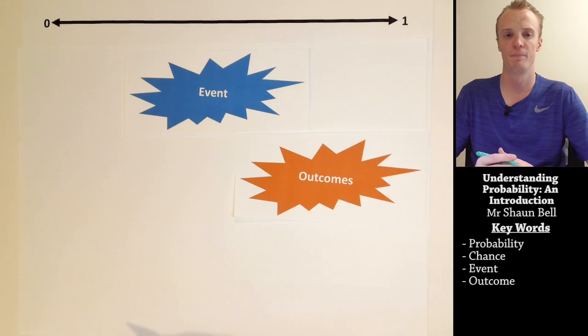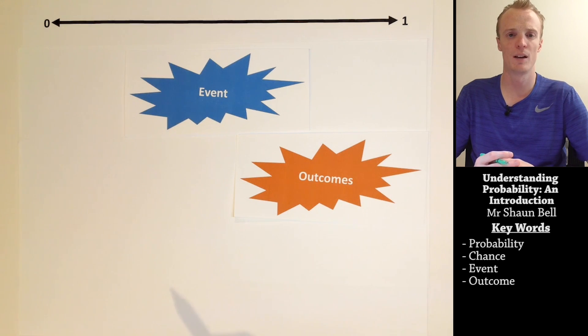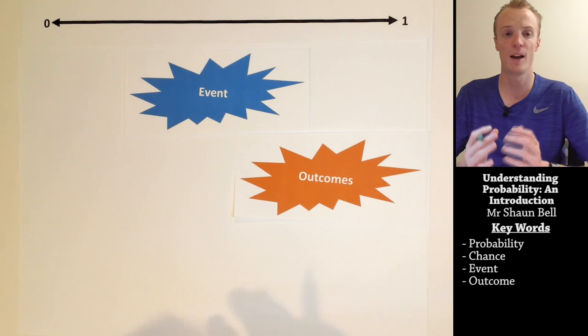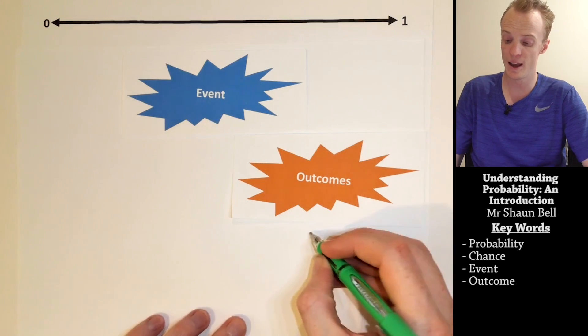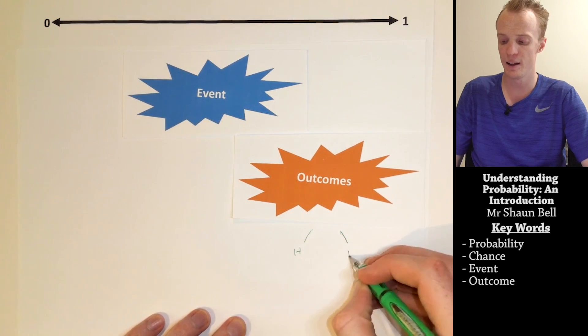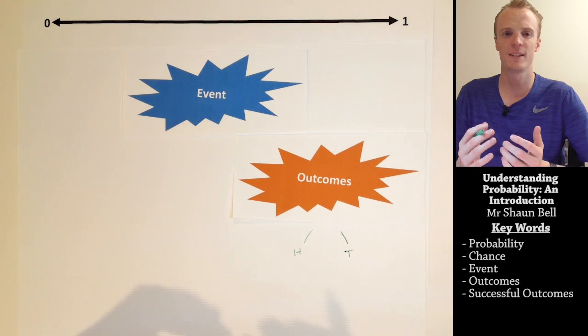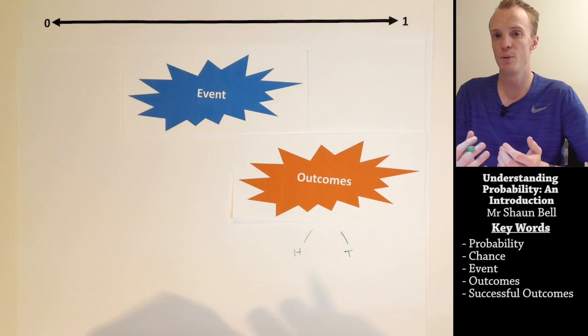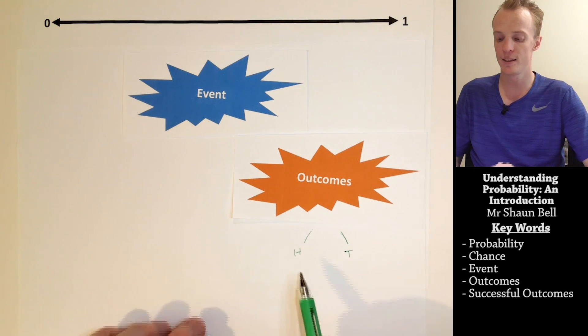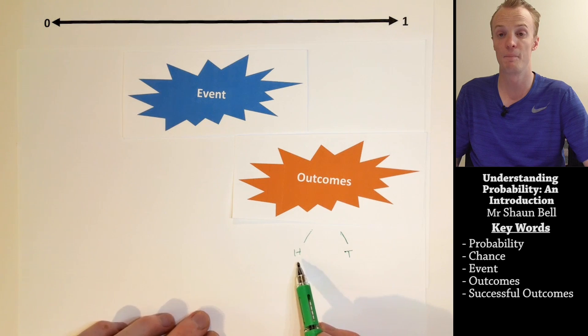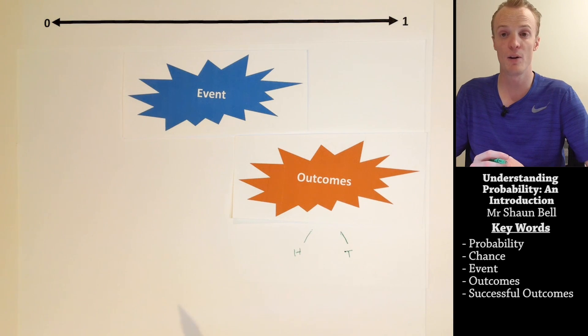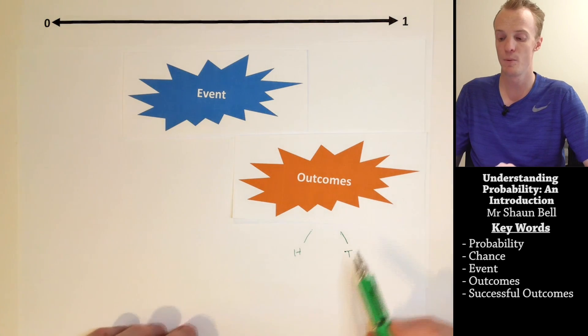Any possible result of an event is known as an outcome. When tossing a coin, for example, there are two possible outcomes: obtaining a head or obtaining a tail. When we talk about successful outcomes, we consider that to be the result that is required. For example, if we're trying to get a head when we flip the coin, our successful outcome would be a head. If we were trying to get a tail, our successful outcome would be a tail.